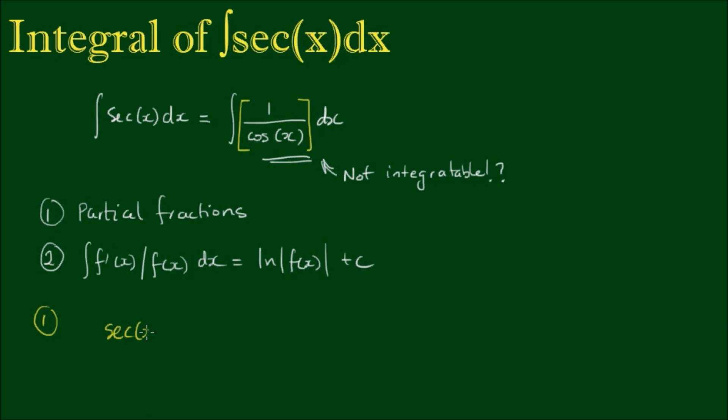So sec x we've already established can be written as 1 over the cos of x. And now this is still equivalent if I multiply the top and bottom of this fraction by cos of x. So effectively I'm multiplying by 1. So the top becomes cos of x and the bottom becomes cos squared of x. The bottom I can rewrite because of the identity cos squared x plus sin squared x is equal to 1. I can rewrite the bottom or the denominator as 1 minus sin squared x.